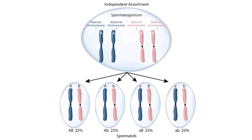Notice that there is a capital A shown on one of the chromosomes and a lowercase a shown on the other. The letter A represents a gene and the capital versus lowercase letters represent alleles. So the letter B represents a different type of gene. For example, the A gene could determine eye color and the B gene could determine hair color. The capital A allele could result in brown eye color and the lowercase a allele could result in blue eye color.